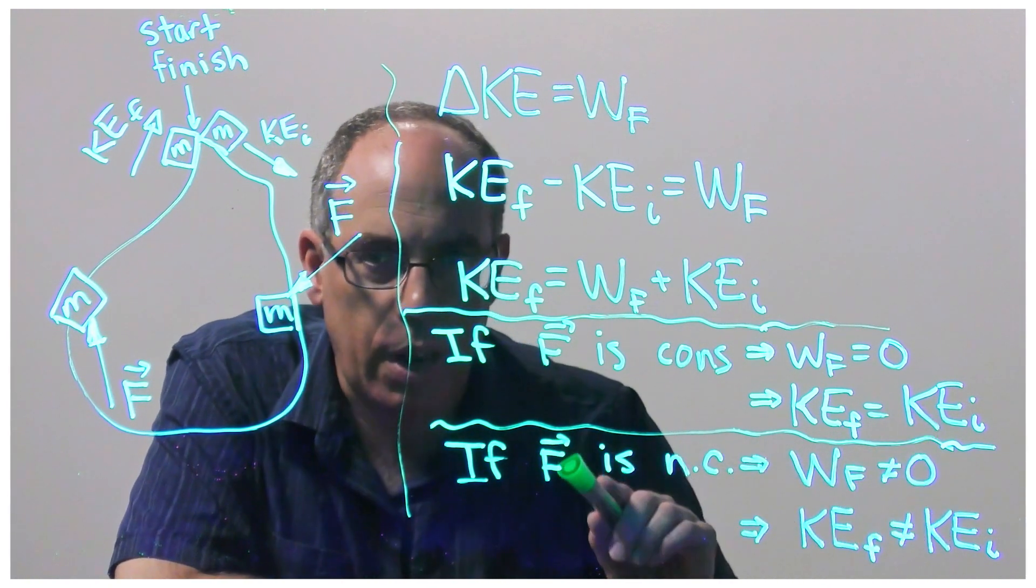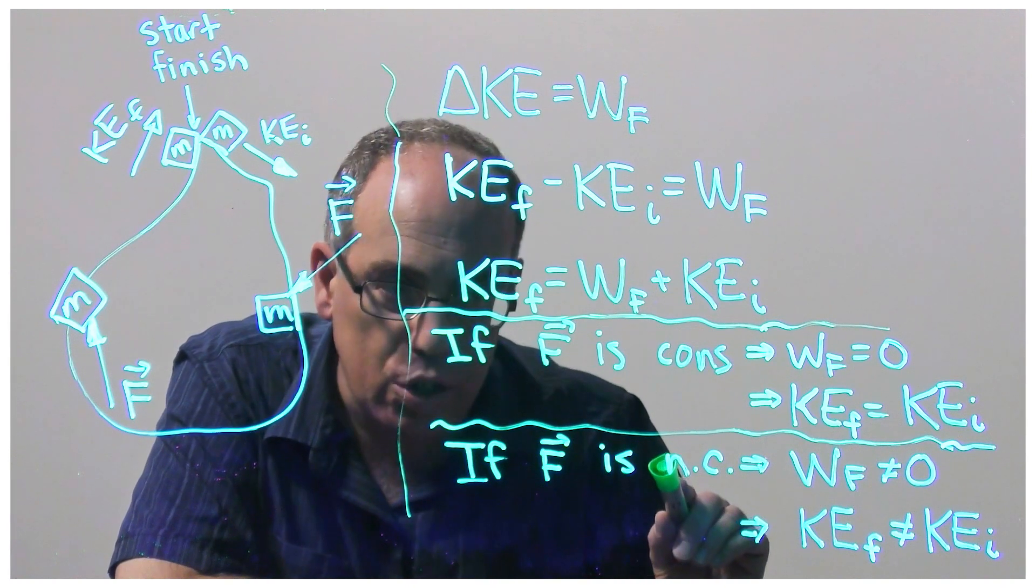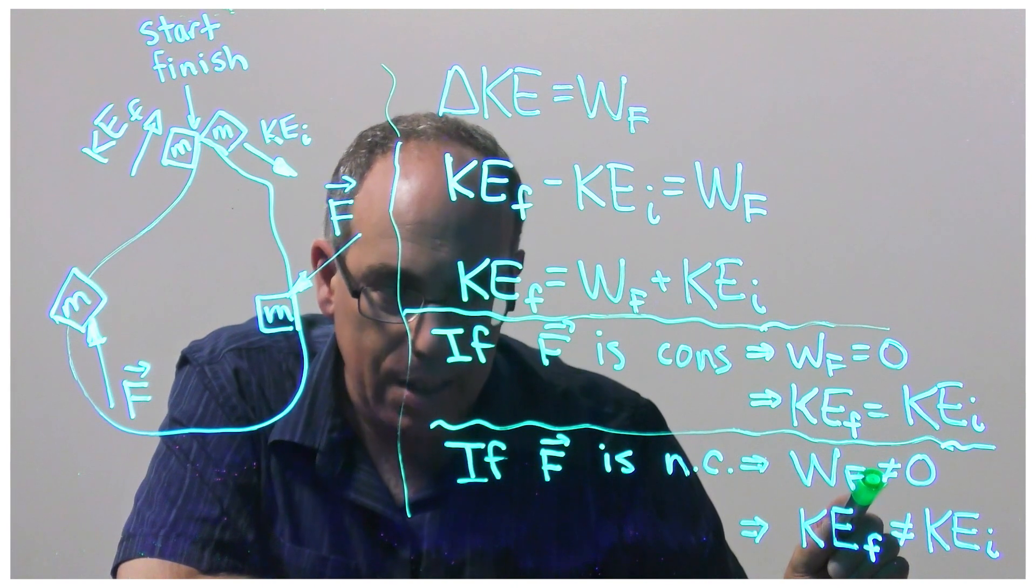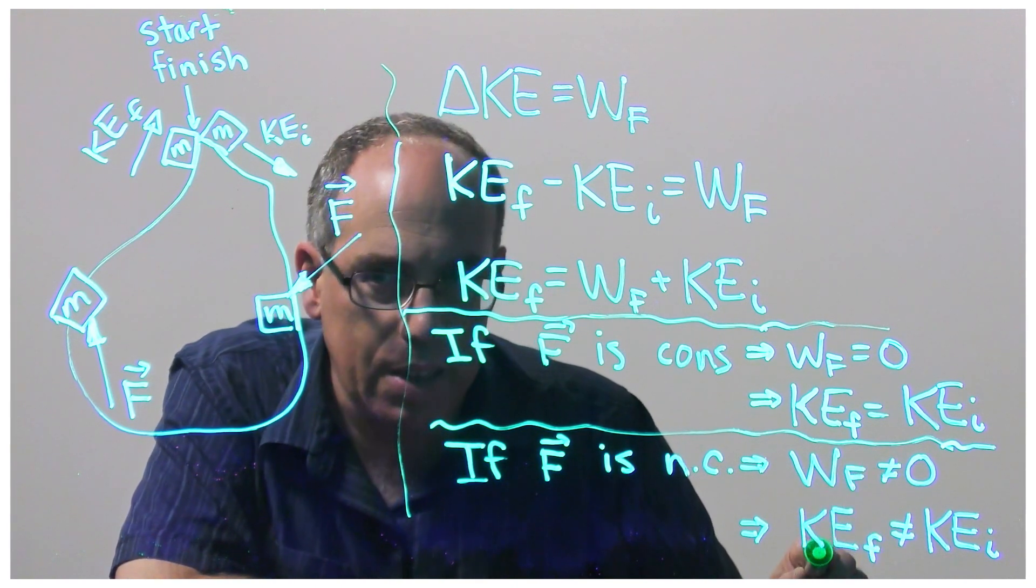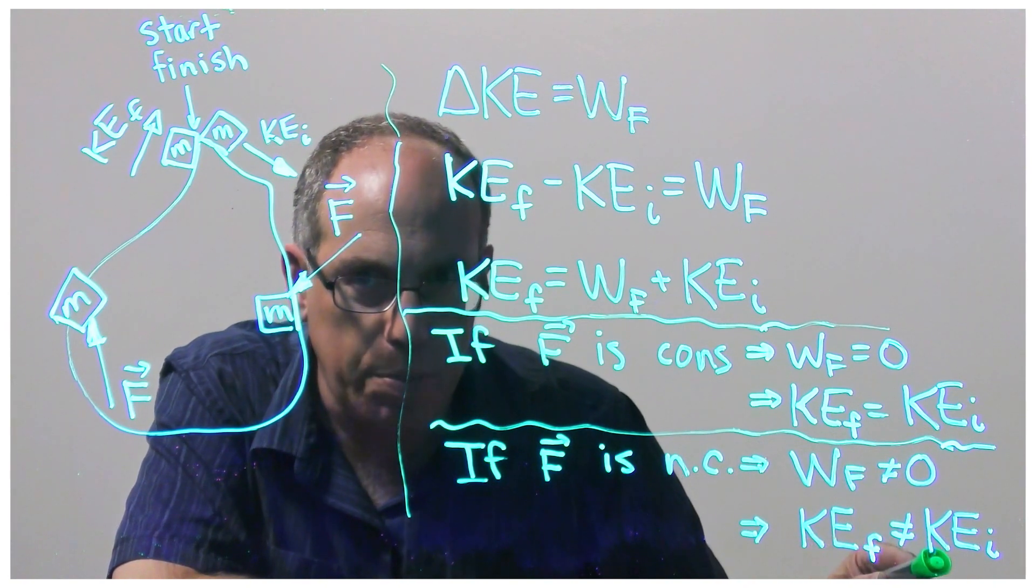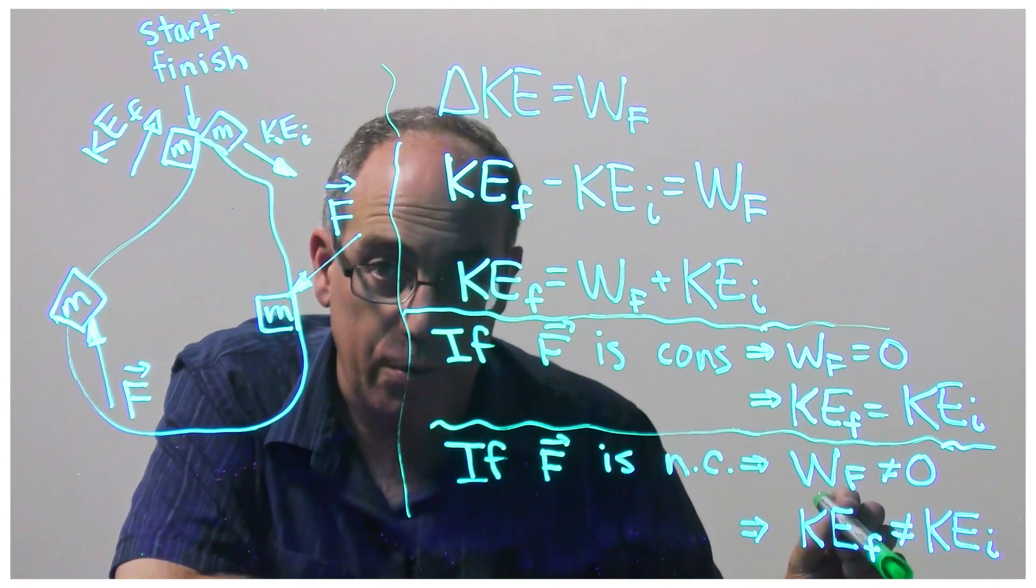On the other hand, if the force is non-conservative then most likely the total work done by the force will be non-zero, which will mean that the kinetic energy at the end of the motion and the kinetic energy at the beginning of the motion will be different.